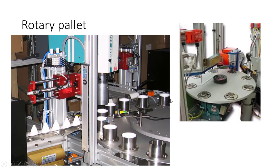The second is the rotary pallet system, where the job is held on a rotary table. You can see that these are rotary tables and different machines work on the outer periphery of this circle on which the job is fixed. So whether you hold the job in a linear pallet system or a rotary pallet system, these are the two types of job holding devices.